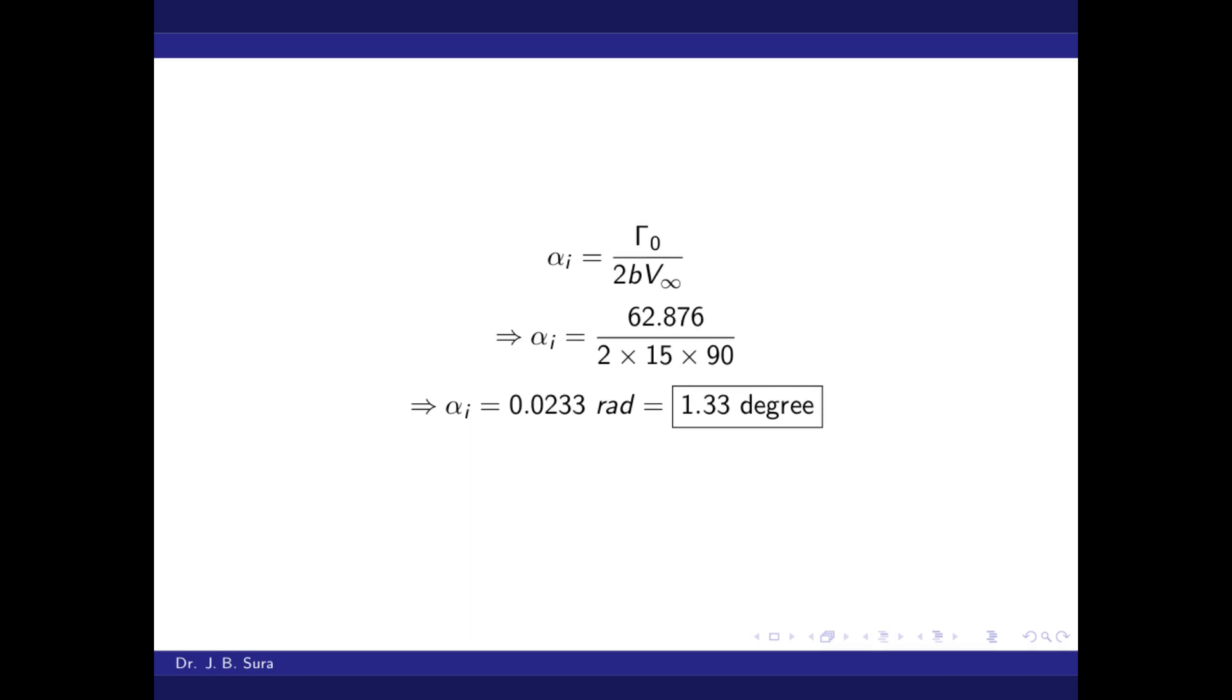Now if we put all these values in the alpha_i equation, we get the answer. Therefore alpha_i equals 62.876 divided by 2 times 15 times 90. The answer in radians is 0.0233 radians. Converting to degrees, we get 1.33 degrees.